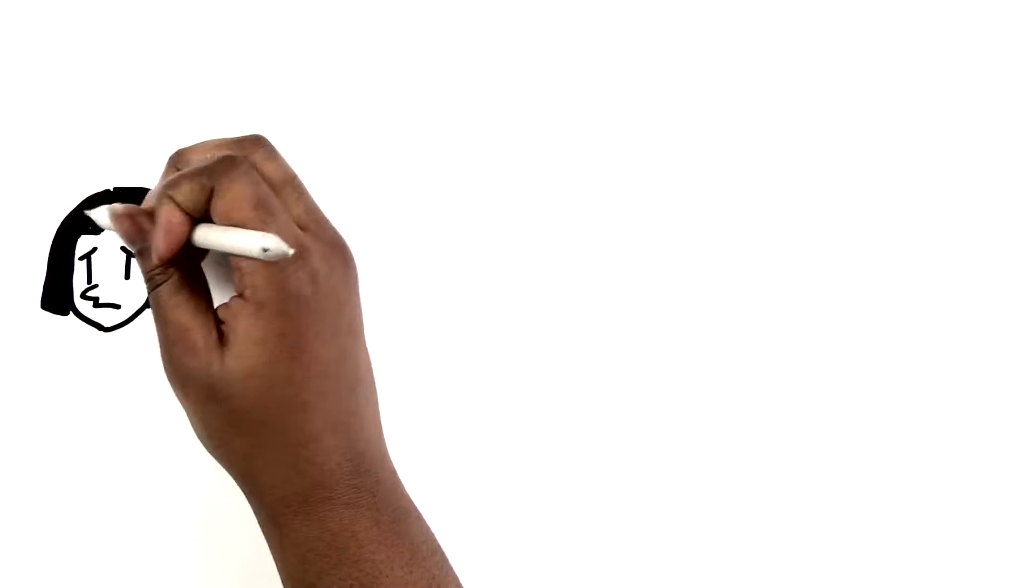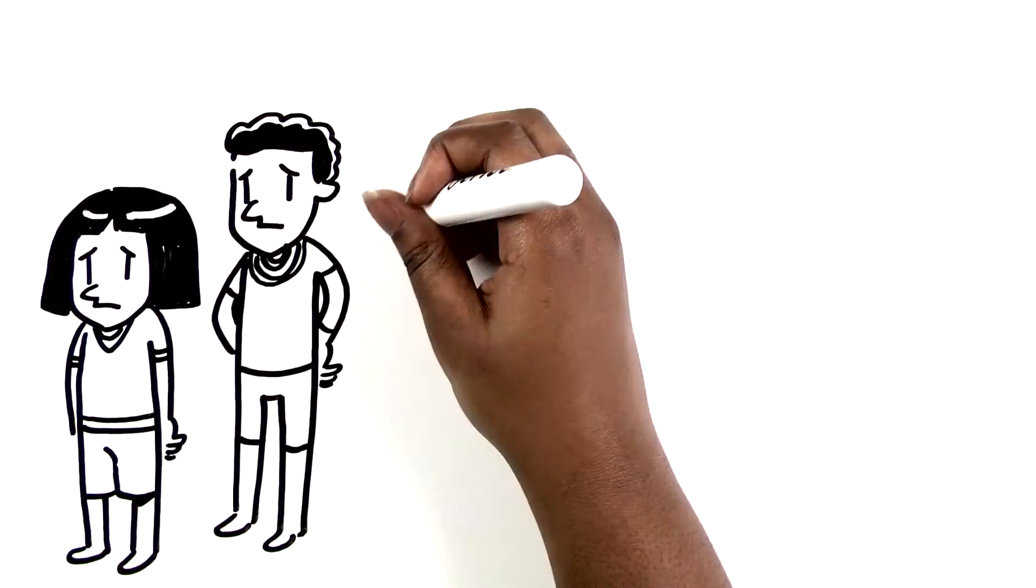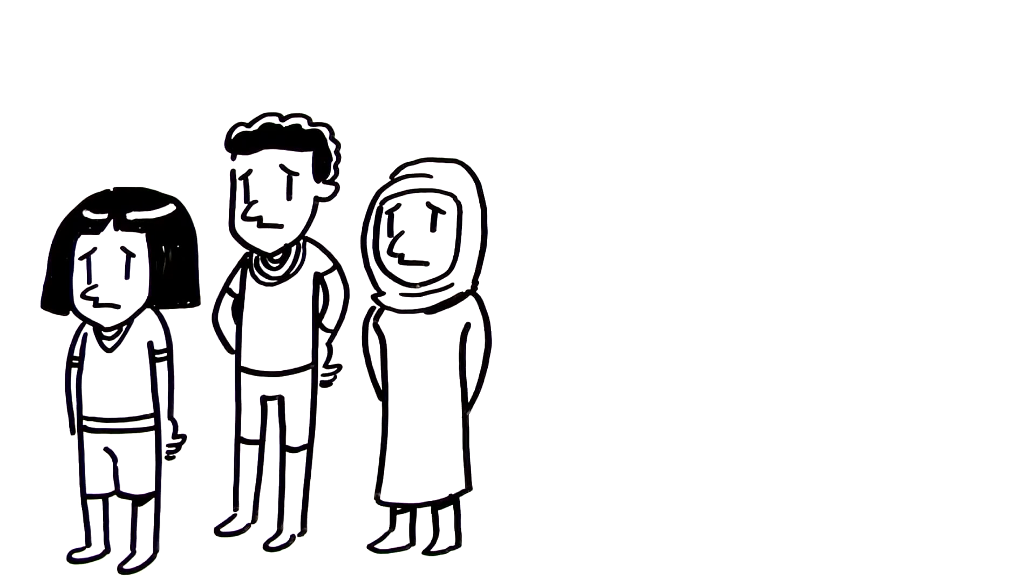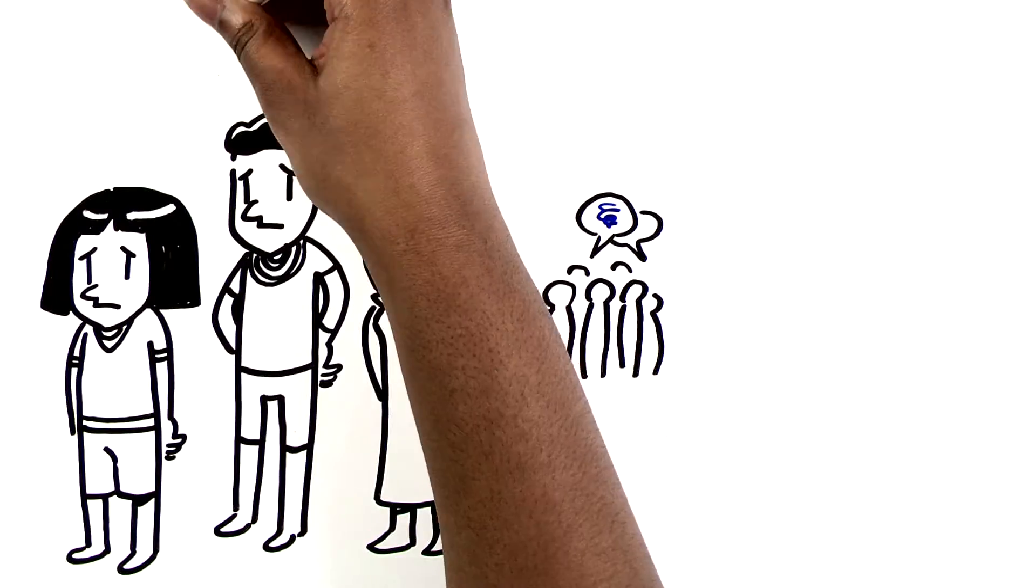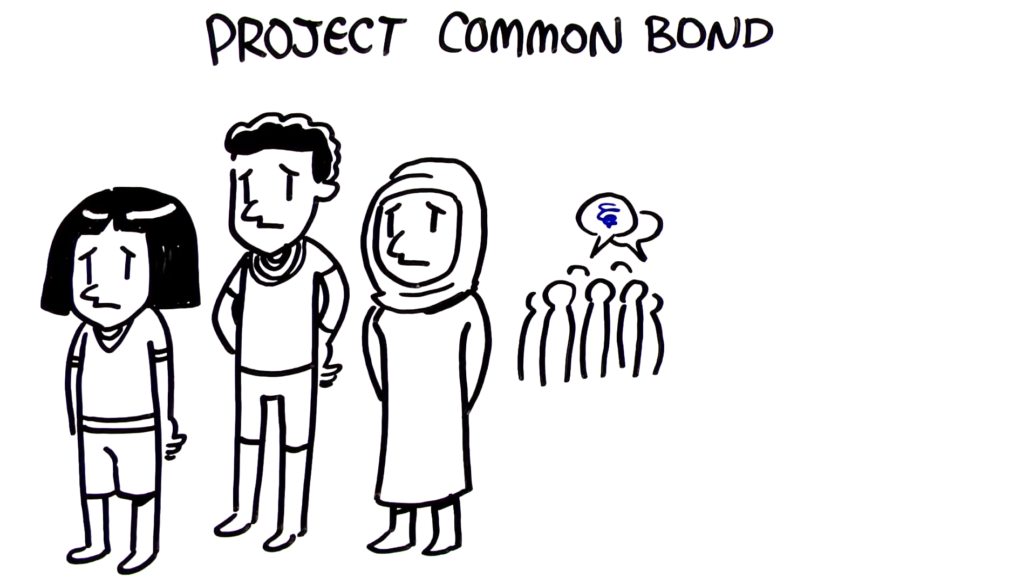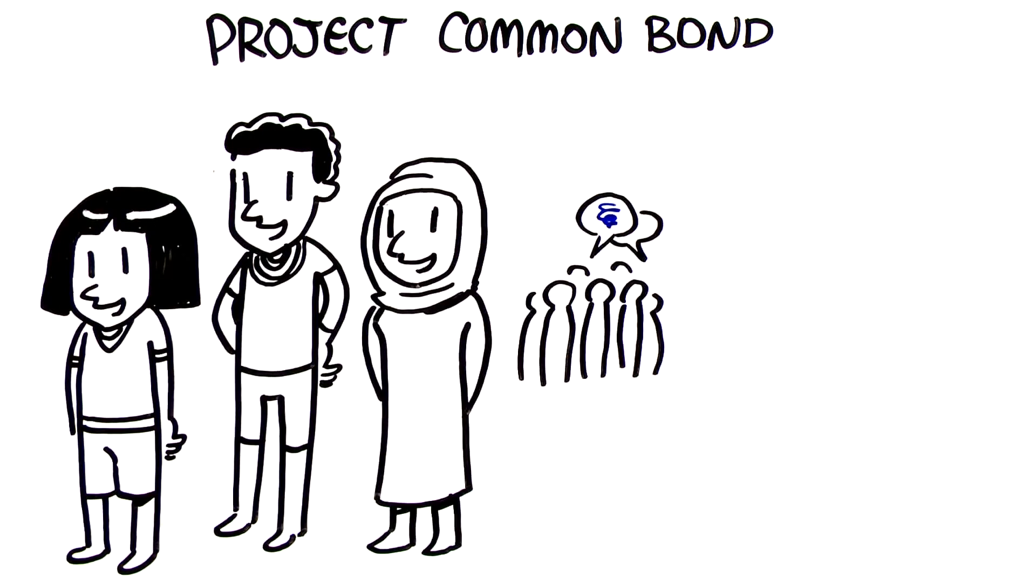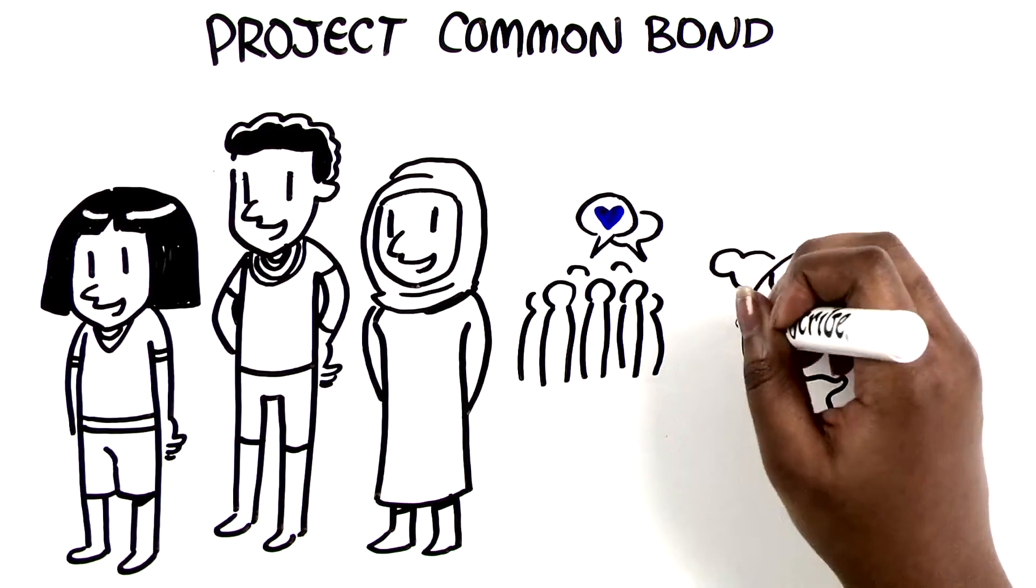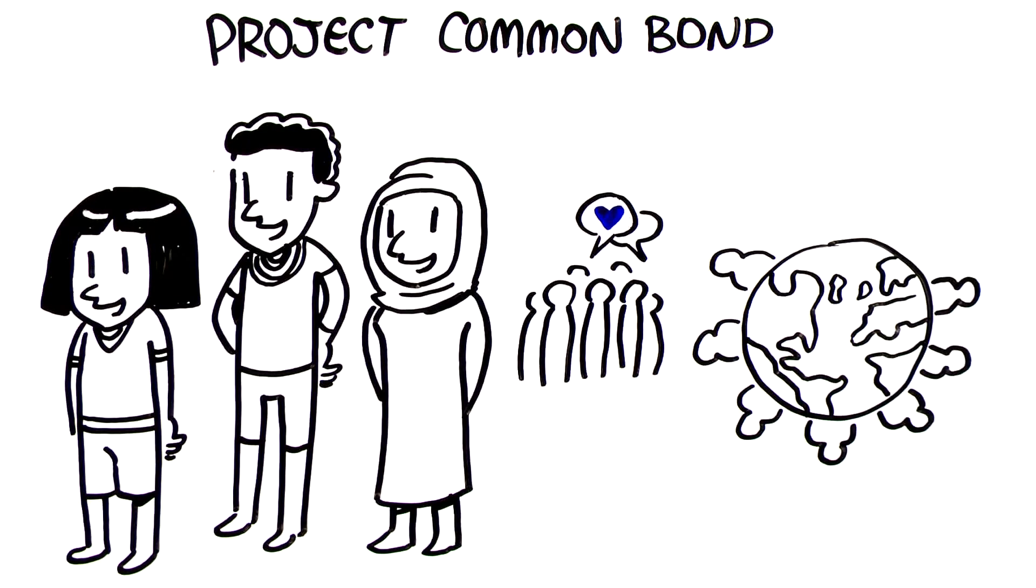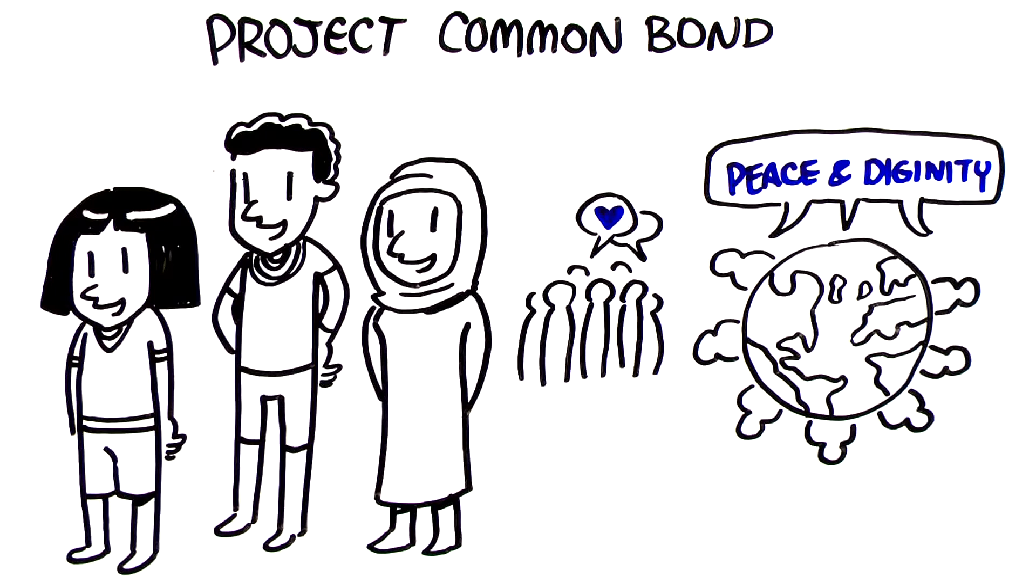International youth who've lost a loved one to terrorism, violent extremism, or war often experience isolation and marginalization from peers and communities. In addition to profound trauma and bereavement, Project Common Bond has united hundreds of teenagers and young adults from more than 20 countries to engage in a dialogue of healing and community building, and guide participants in collaborative efforts to promote dignity, resolve conflict, and build peace, equipping youth with the leadership skills to create positive change in their lives and communities.